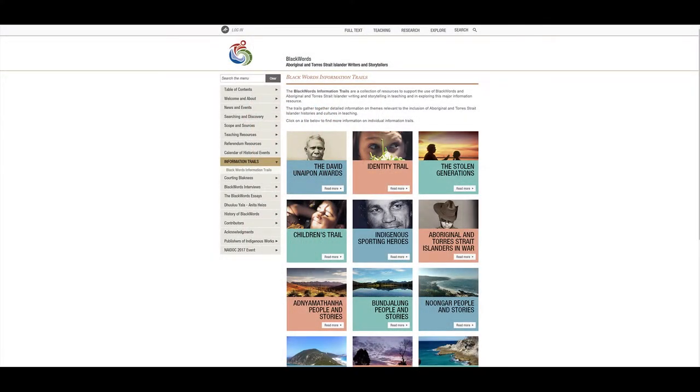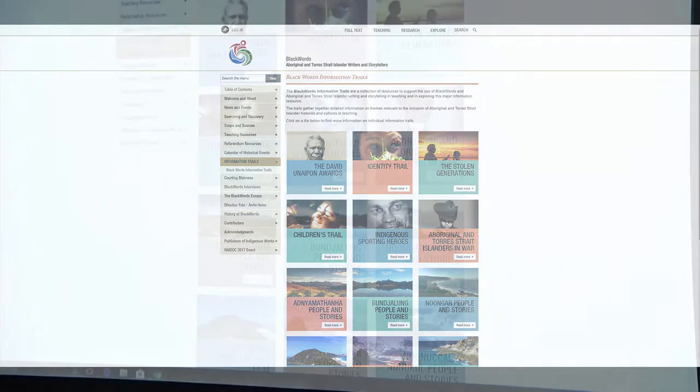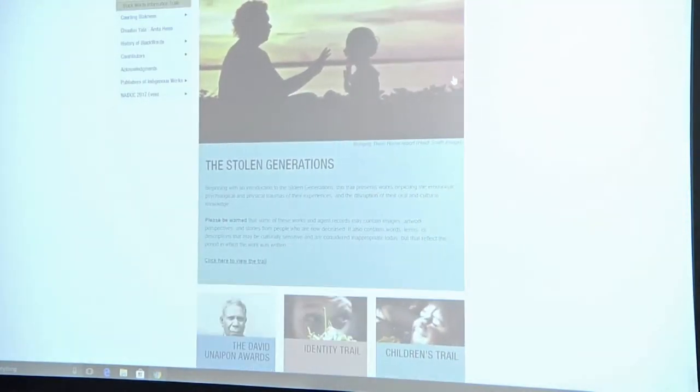But the exhibition is mostly around these trails, right? And so you can see information trails. So they're themed for the most part, or they're divided down into different sub-content areas. And it includes the different peoples from different parts of the countries, war stories, sports, David DuPont, and then take a look at the Stolen Generations.